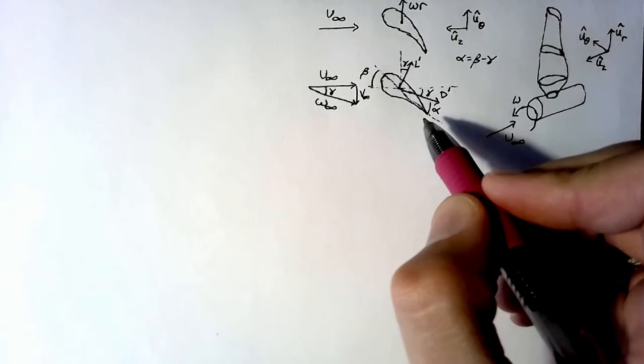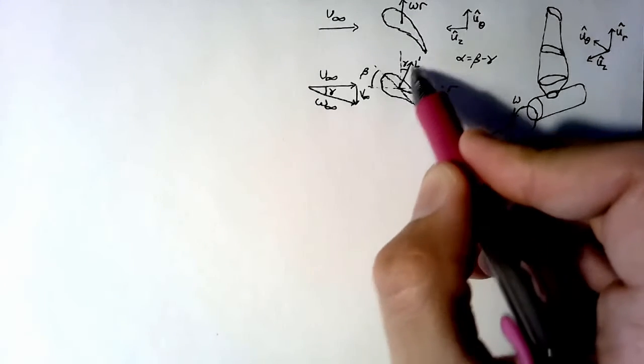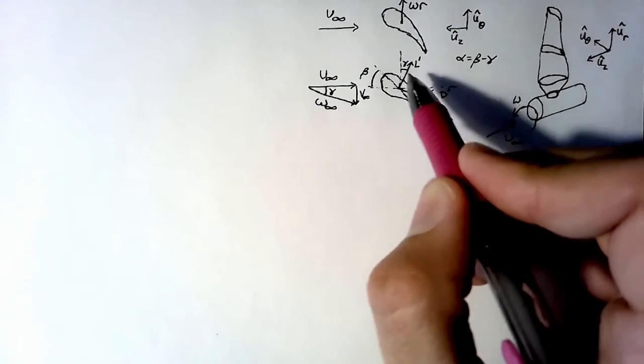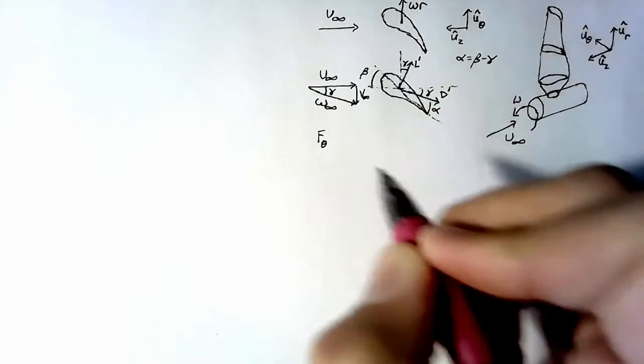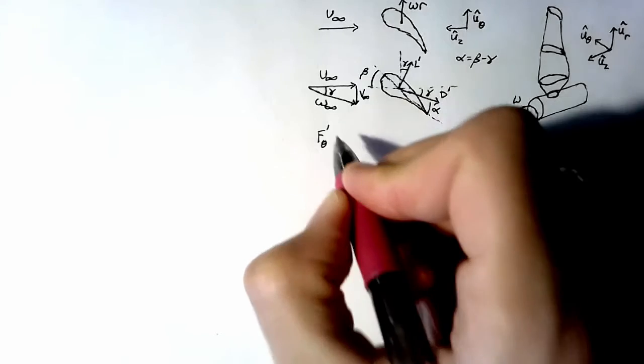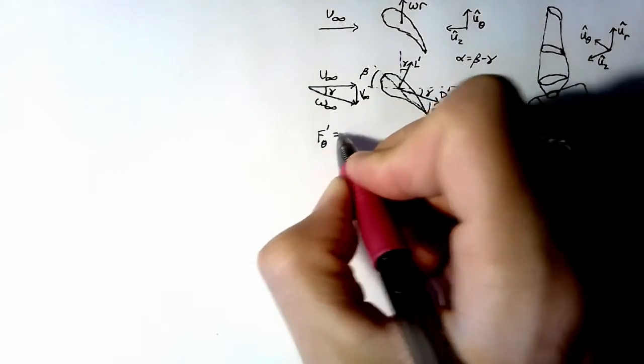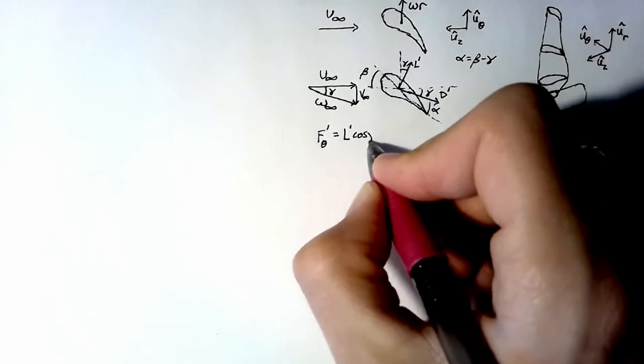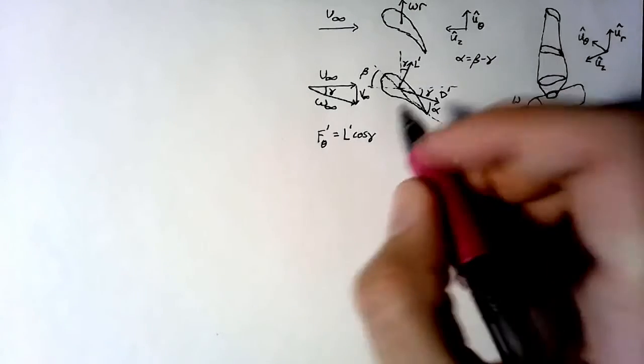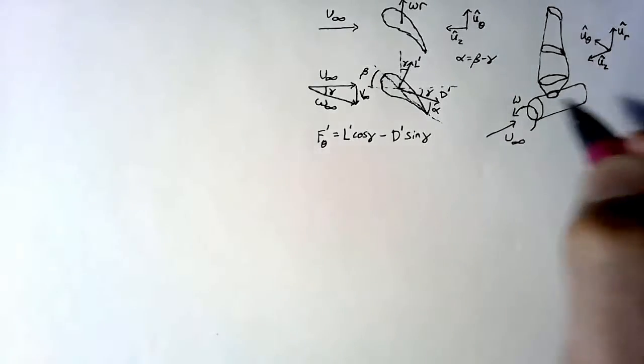Now whenever we're designing a wind turbine blade, we're thinking about how much moment the force on the wing is actually generating. The lift isn't in the proper direction to generate moment. We're actually interested in the force in the theta direction. I'm still going to use this prime to denote that this is the force per unit span. And this is going to be equal to the lift multiplied by the cosine of gamma. But the drag actually plays a role as well, so that's going to be minus the drag multiplied by sine of gamma.